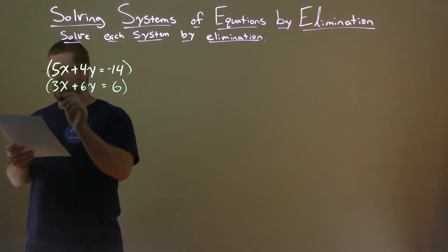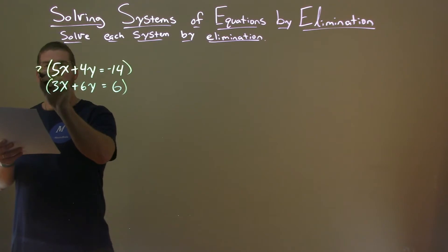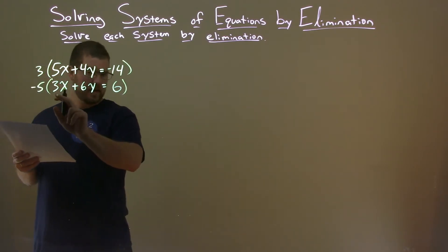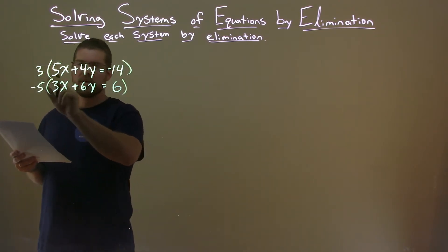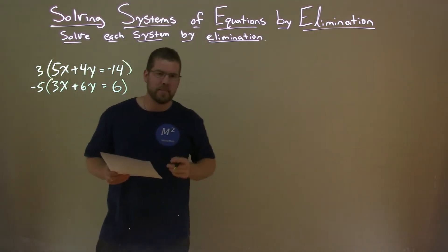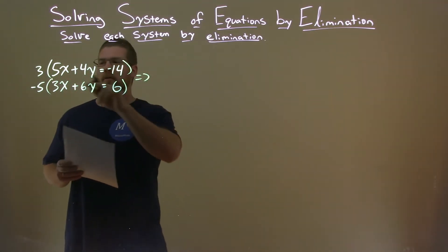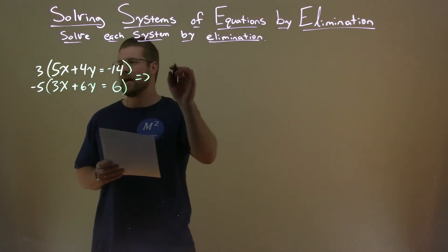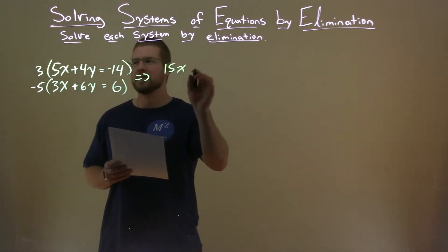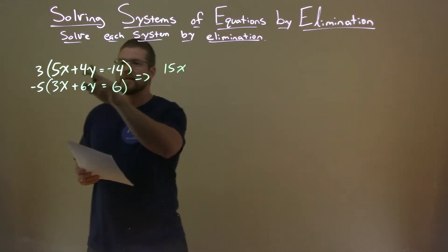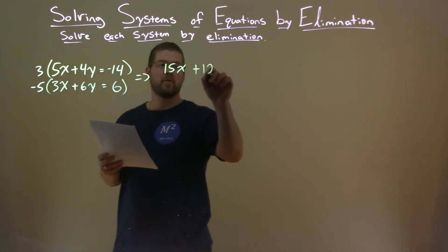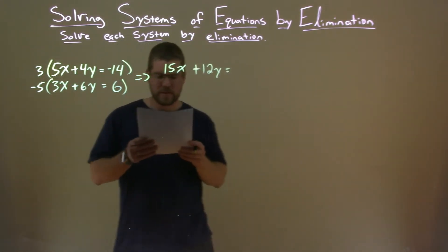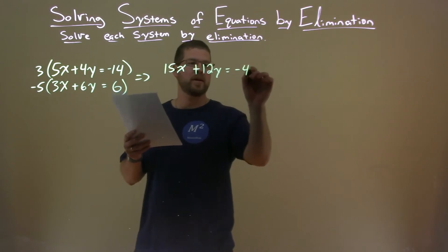If I multiply the top by 3 and the bottom by negative 5, negative 5 times 3 is negative 15, and 3 times 5 is 15, so the x's will eliminate when we add them. Let's do that to all parts. 3 times 5x is 15x. 3 times 4y is 12y. 3 times negative 14 is negative 42.